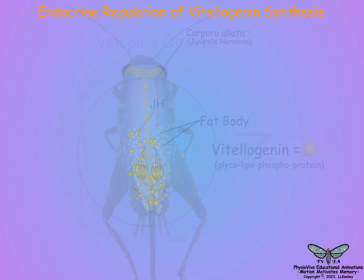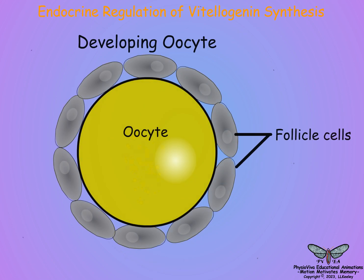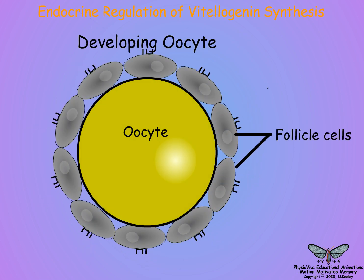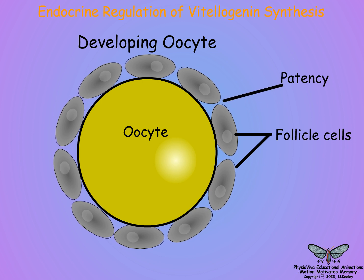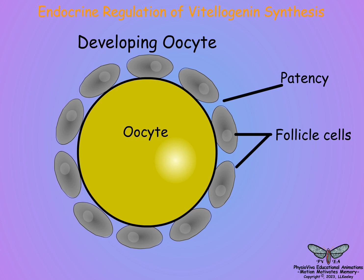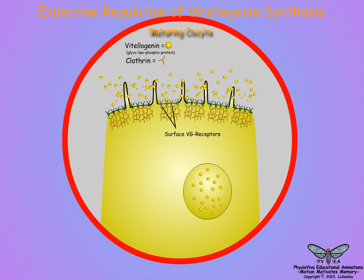Juvenile hormone also results in ovariolar follicle cell patency, which is follicle cell shrinkage that produces a gap junction between follicle cells and exposes oocyte membrane surfaces to hemolymph-borne vitalogenin. Surface receptors at the base of oocyte microvilli bind hemolymph-borne vitalogenin.